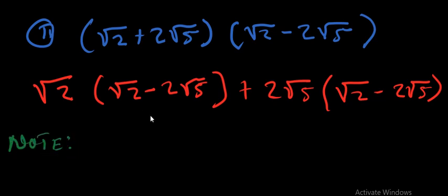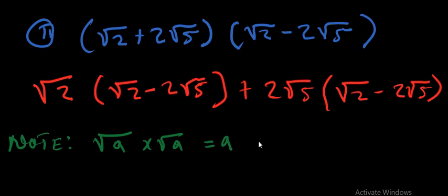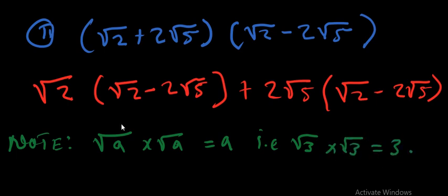An important rule governs this: √a × √a = a. So for example, √3 × √3 = 3. Take note of that point.